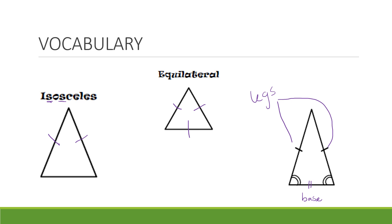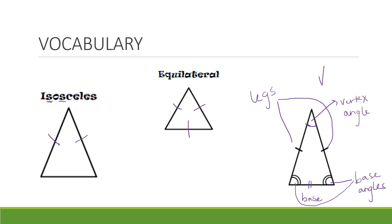We refer to the base a lot when we talk about isosceles triangles. The angles that lie on the base we refer to as the base angles. Since they're across from my congruent sides, these two base angles look like they're going to be congruent. The last thing we need to talk about is this top, which is called my vertex angle. It's the only one that stands apart from the rest. This vertex angle is the top of our triangle, and this is when we're talking about isosceles, where the two sides are shown congruent.